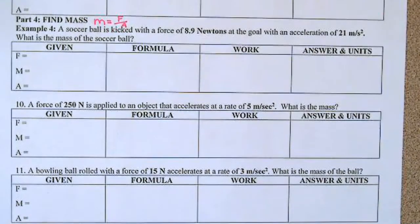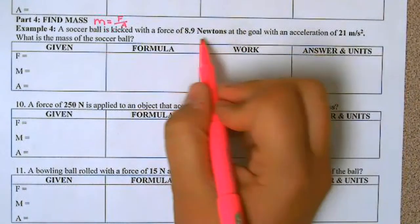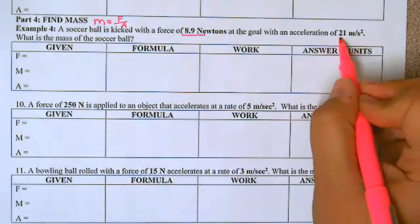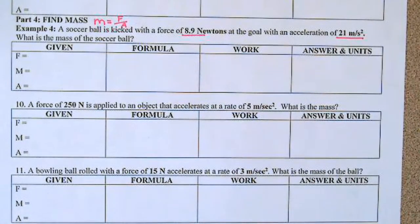So let's look at example number four. A soccer ball is kicked with a force of 8.9 newtons at the goal with an acceleration of 21 meters per second. What is the mass of the soccer ball?